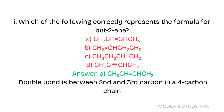Question 1: Which of the following correctly represents the formula for but-2-ene? Answer: CH3CH=CHCH3. The double bond is between the 2nd and 3rd carbon in a 4-carbon chain.